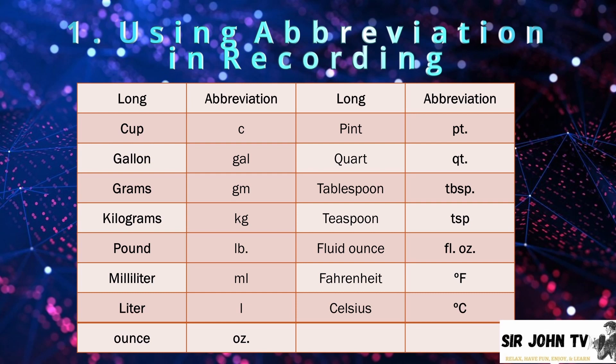Number one is using abbreviation in recording. We have here the long terms and the short term or abbreviation for our units of measurement. Let us start with the cup which is C, gallon gal, grams gm, kilograms kg, pound lb, milliliter ml, liter l, ounce oz, pint pt, quart qt.